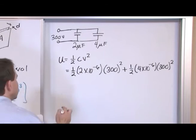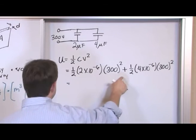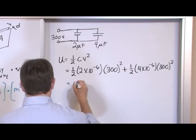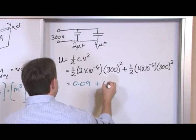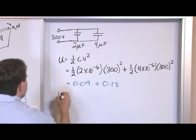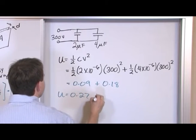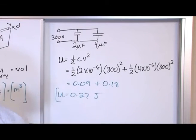So now that we have this you just literally plug this in your calculator and you'll get 0.09 plus 0.18. So when you add them both together you'll get 0.27 joules. That's how much energy in joules is stored in there.